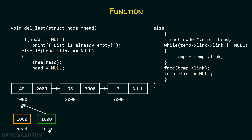You can see here, this temp pointer is created, which is currently pointing to the first node of the list. After this, in this while loop, I am checking the condition: is temp->link->link not equal to null? Previously I was checking temp->link not equal to null, but right now I am checking temp->link->link not equal to null, because I want to stop my pointer at the second last node of the list.